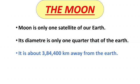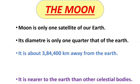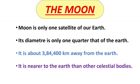The light from the Moon takes only 1.3 seconds to reach the Earth. It is true — it is the nearest celestial body to us on the Earth.